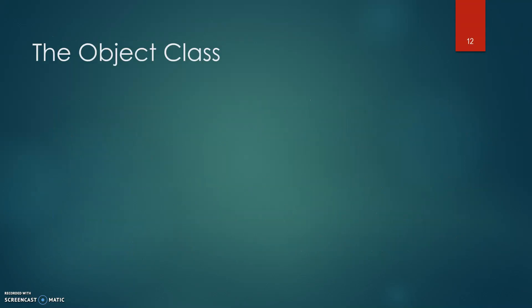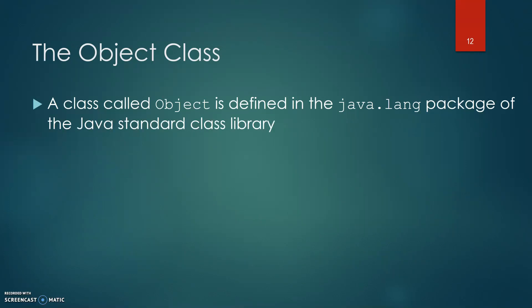The Object class. A class called Object is defined in the java.lang package of the standard Java class library. All classes are derived from the Object class.